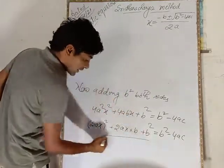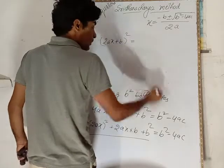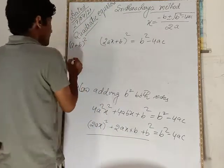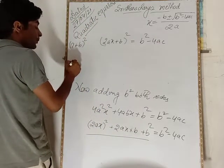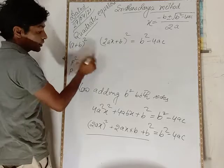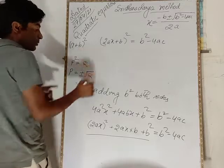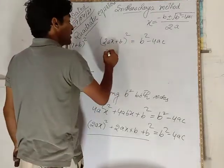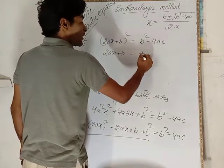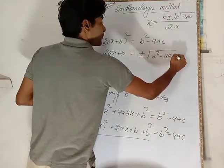Left hand side, 2ax plus b whole square equals right hand side b² minus 4ac. Now we know that if p² equals q, then p equals plus or minus square root of q.